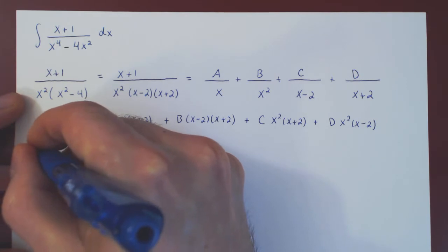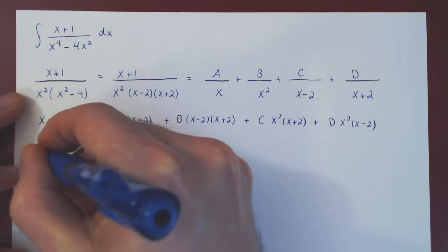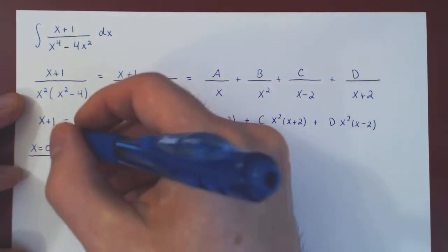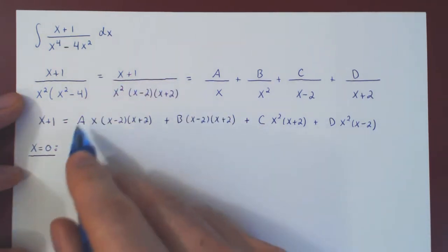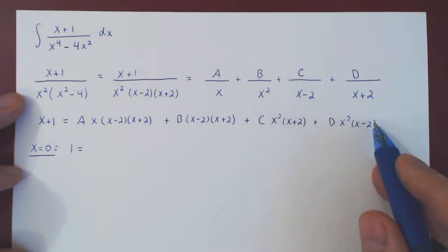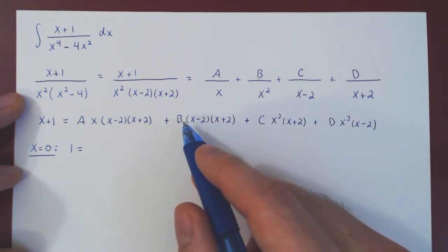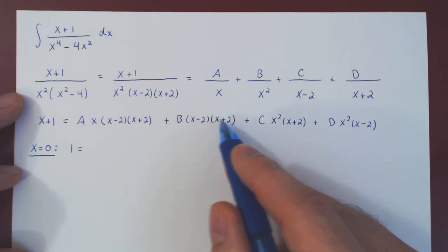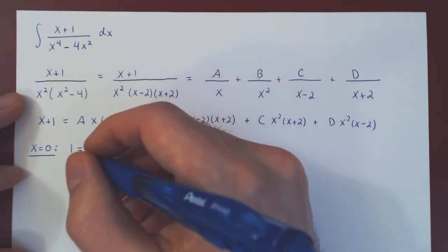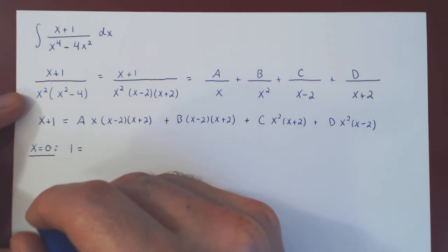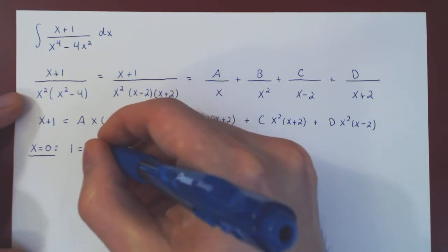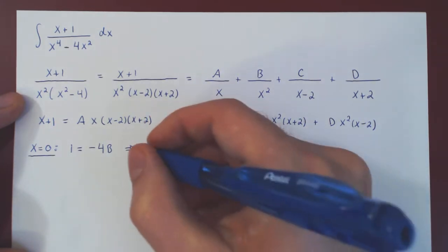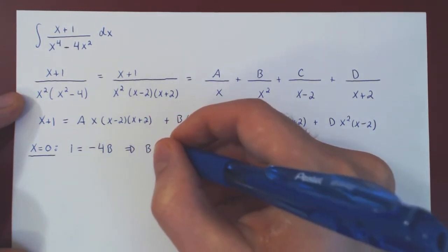Starting with x equals 0: the left side gives 1. The A, C, and D terms all vanish, leaving B times negative 2 times 2, which is negative 4B. So 1 equals negative 4B, and dividing both sides by negative 4 gives B equals negative 1/4.